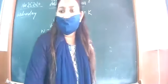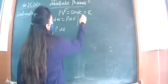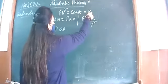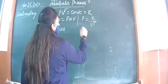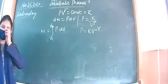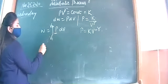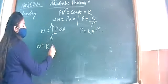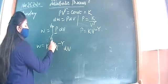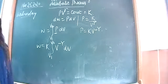Now let us find the expression during an adiabatic process. From the equation, put P equal to k upon V raised to power gamma, so P equals k times V raised to minus gamma. Substituting this value, take k constant outside, giving V minus gamma dV within the limits V1 to V2.